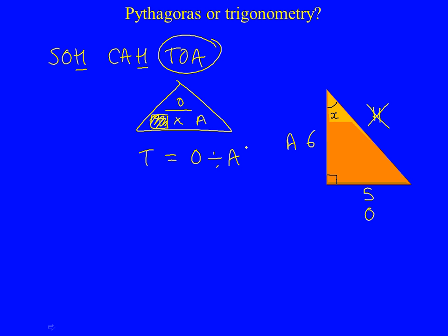Now we write down what it stands for. It stands for tan x equals O, which is 5, divided by A, which is 6.